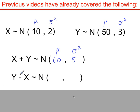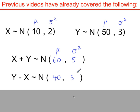For the normal variable y minus x, to work out the mean, it's the mean of y minus the mean of x, so 50 minus 10. Y and x both have a variance, but we don't subtract — we always add variances. So 2 plus 3 gives 5, and that is the variance of the normal variable y minus x. We always deal with variances and not standard deviations. So if standard deviations are given, convert them first to variances by squaring, and then add variances.